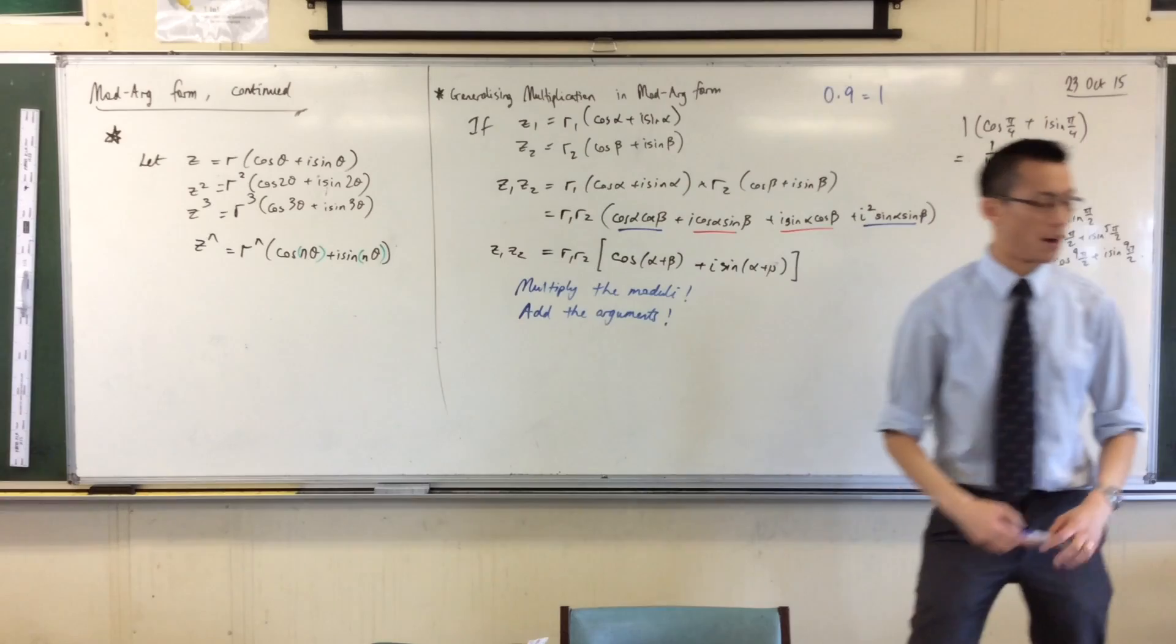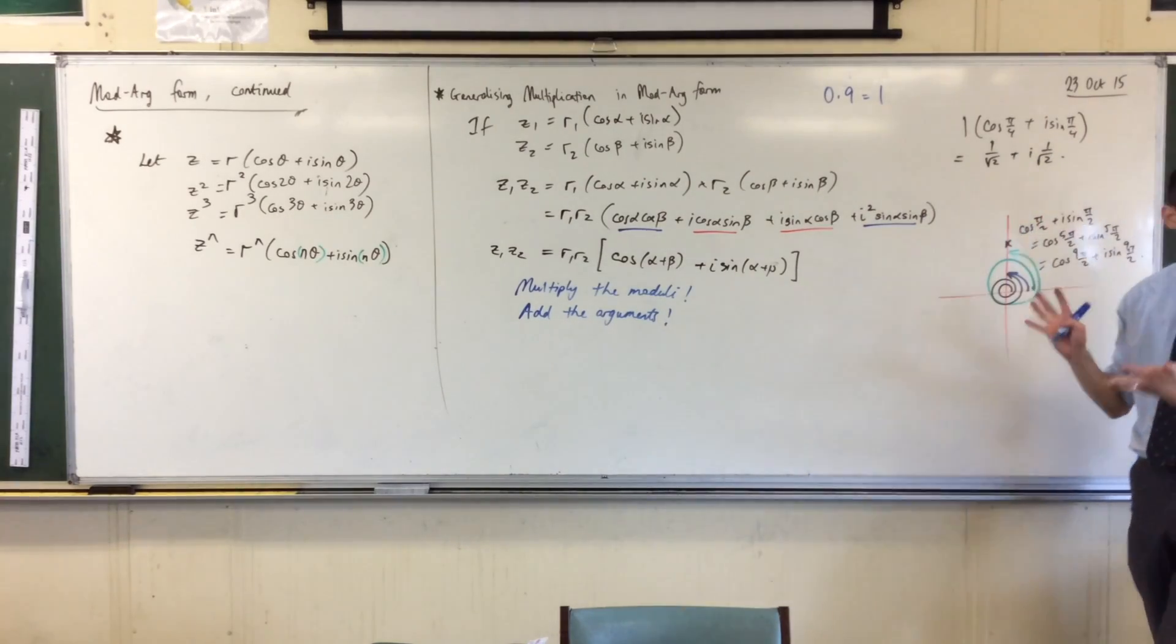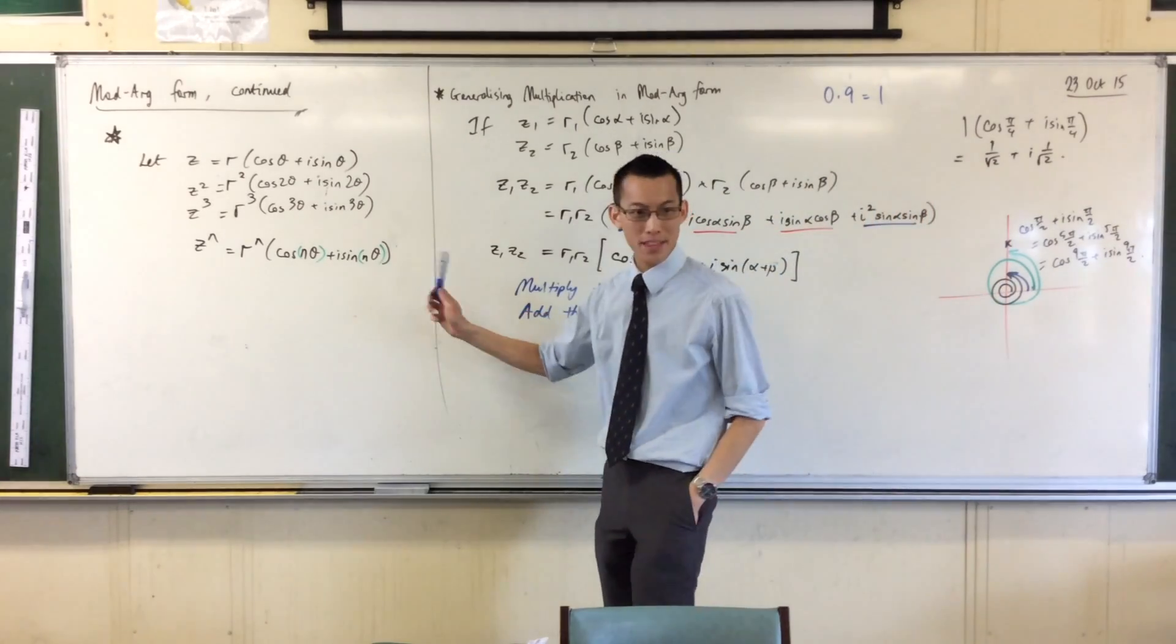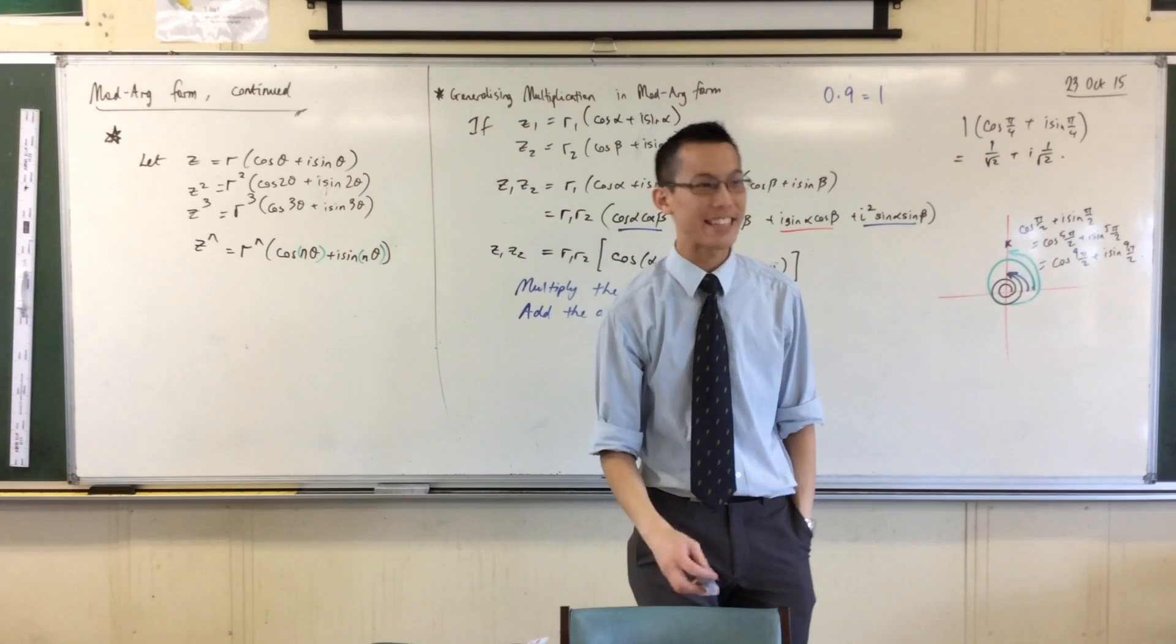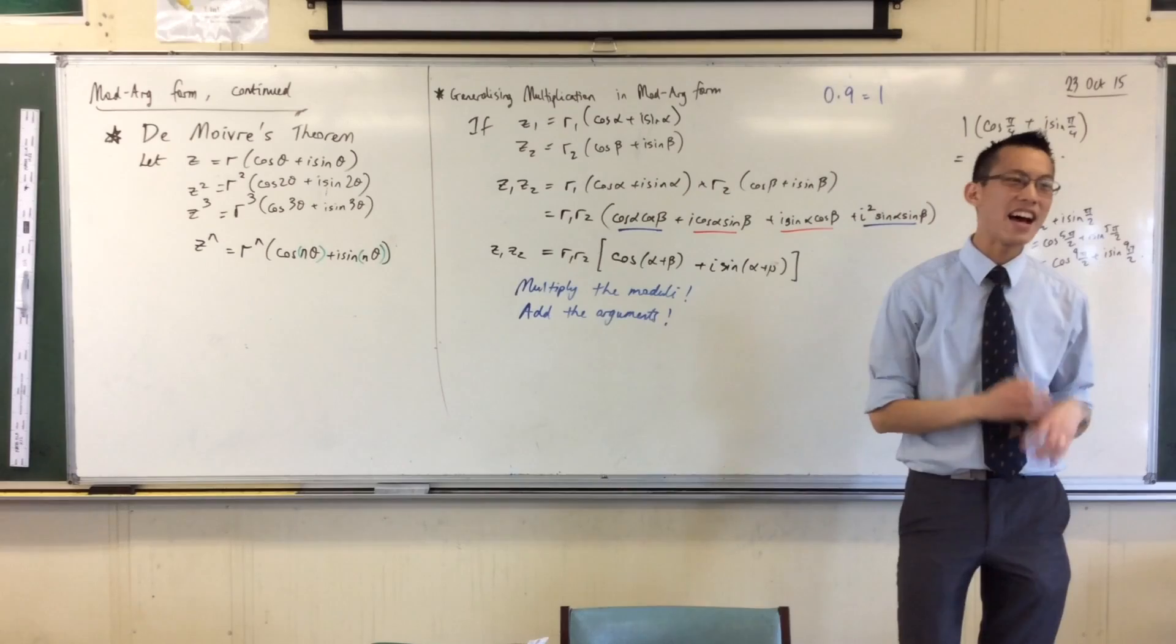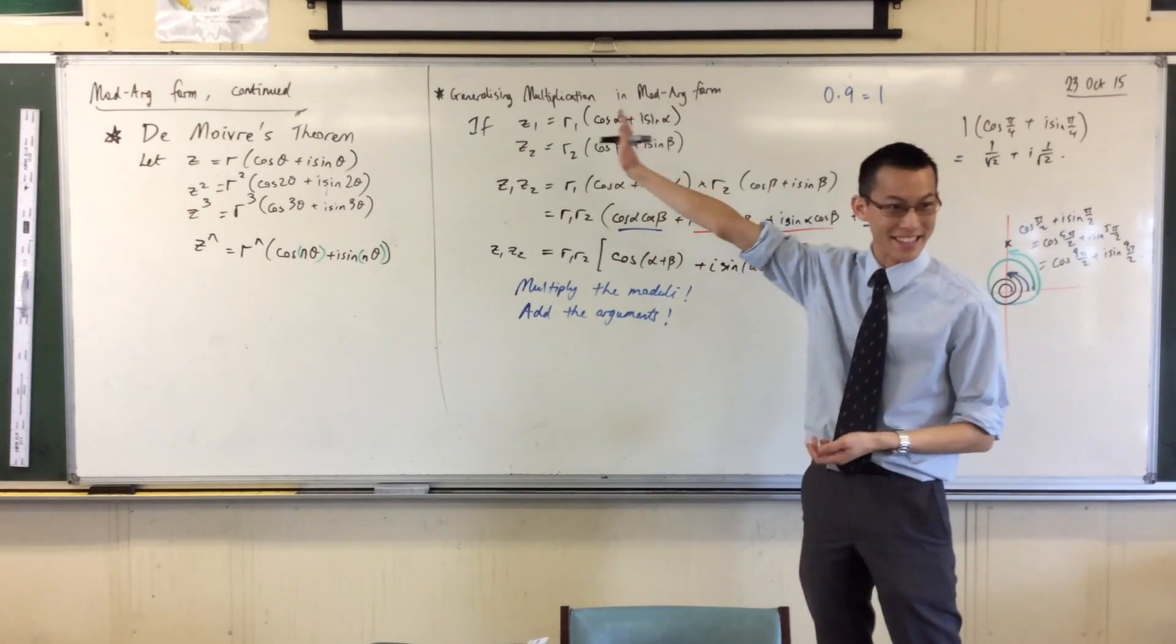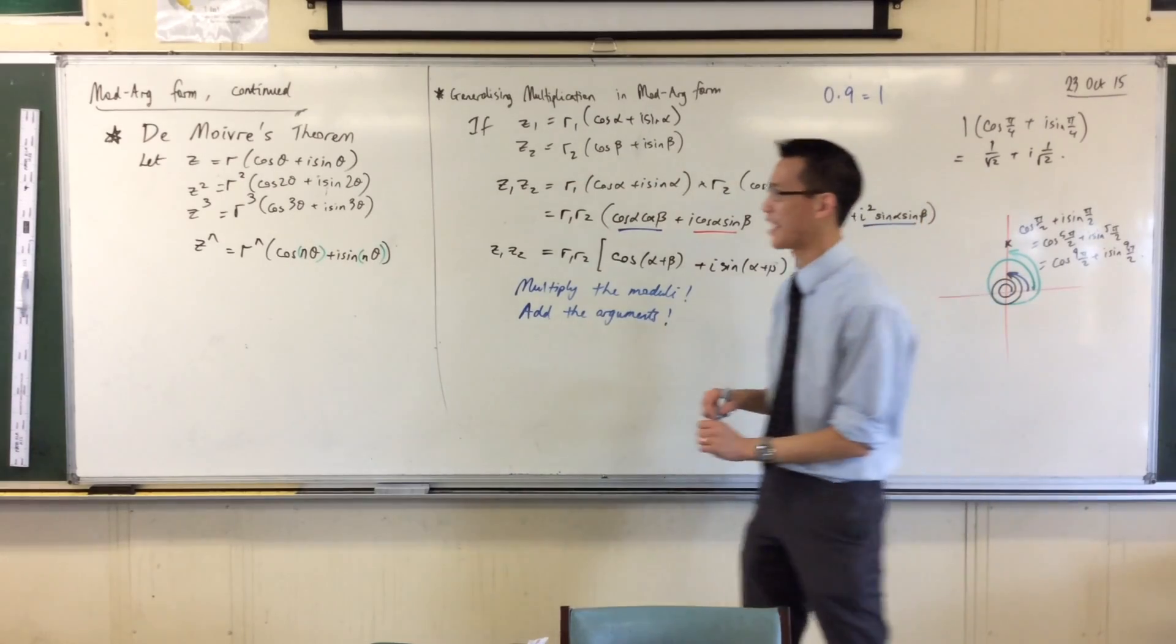Now you remember I said the complex plane, we call it the Argand diagram. Argand was a French mathematician. Another French mathematician came up with this. Now this is the name I'm going to put on this, and I'm going to write it first and then I'm going to teach you how to pronounce it. So here's the theorem.